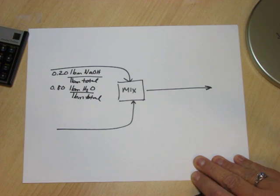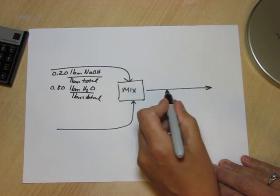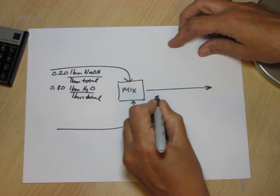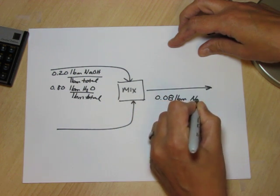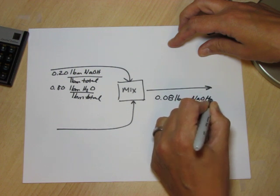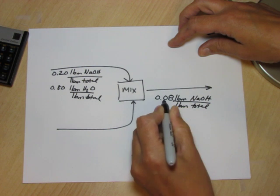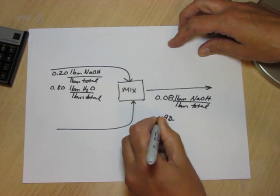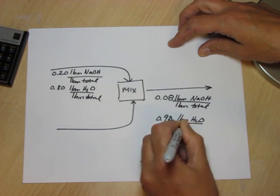Now the plan is to produce a stream that is 8% sodium hydroxide so here's the product stream. I'll write that this stream is 0.08 lb NaOH per lb total. And the balance must be 0.92 lb water per lb total.